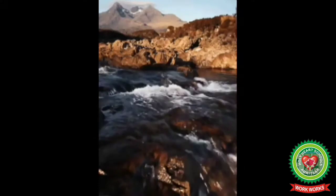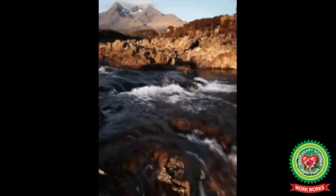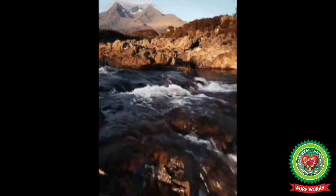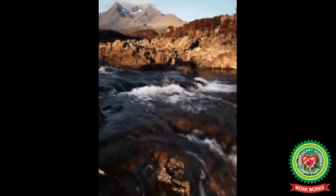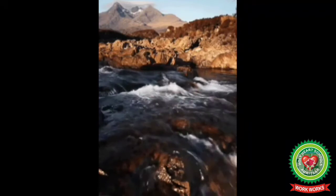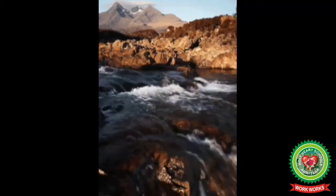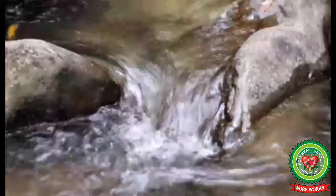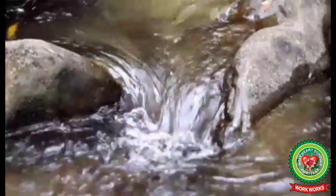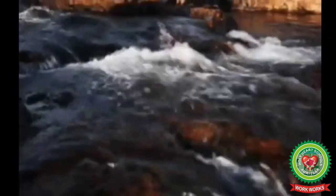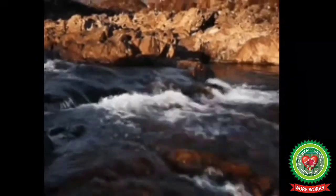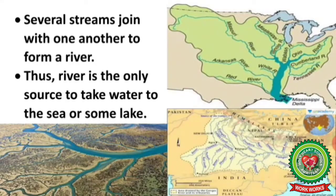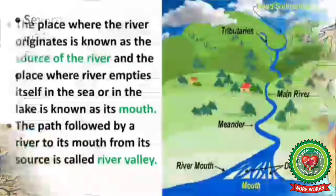Fluvial processes are related to the gradational work of a river. A river is the most important agent of gradation — the process of bringing the earth's surface to a common level, where highlands are eroded and their heights decreased, and lowlands are filled and their heights increased. Rainwater or water from melting snow starts flowing down the slope in channels and gullies; several streams join to form a river, which is the only conduit to take water to the sea or a lake.